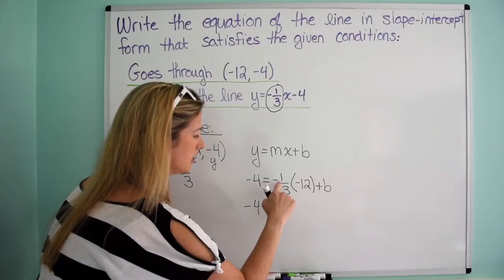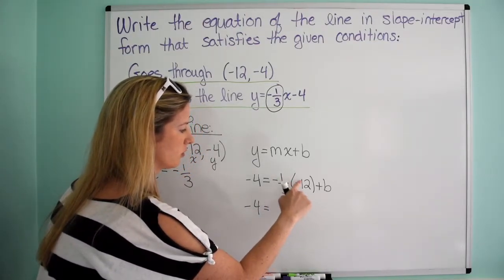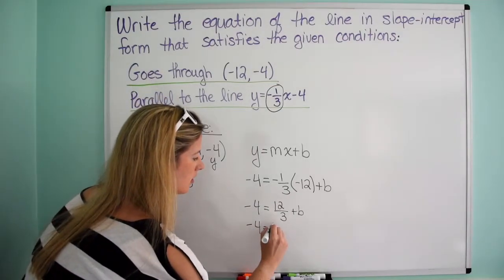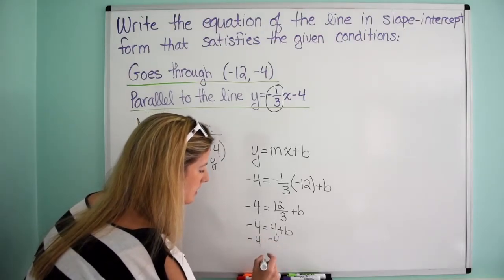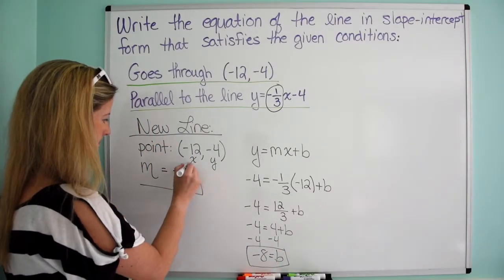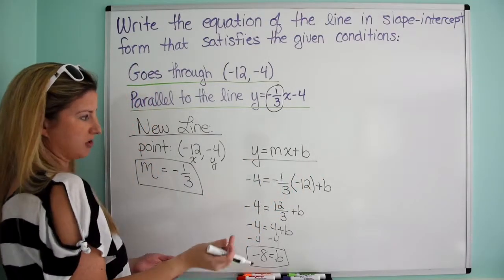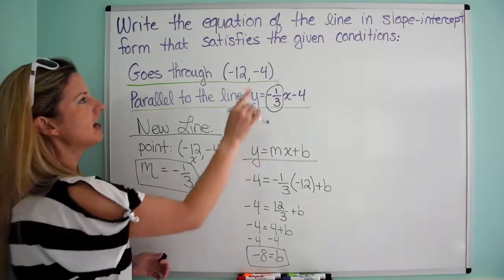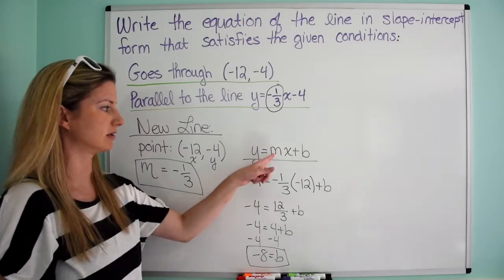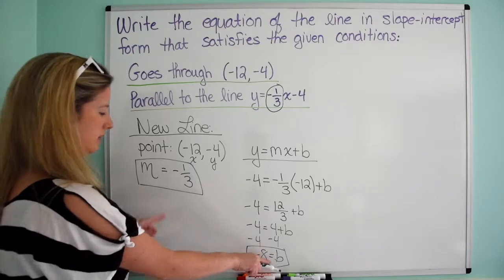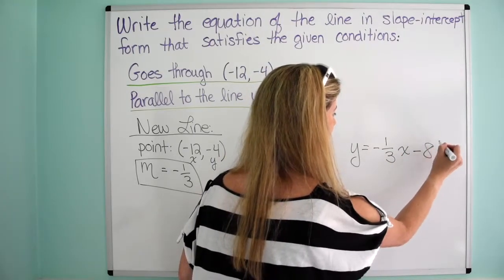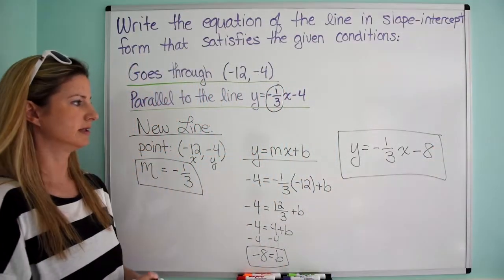So now: negative 4 equals — negative times a negative is positive — so 1 times 12 is 12 over 3, plus b. And 12 over 3 is 4. Subtract 4 from both sides and I end up with negative 8 equals b. So now I have my b and my m. Writing it in y equals mx plus b form: y equals negative one-third x minus 8.